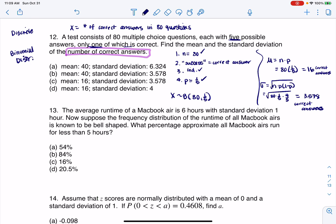And let's see what we got here. So the mean is not 40, not 40, it is 16. Standard deviation is not four, it's 3.578. There we go. Thanks so much.